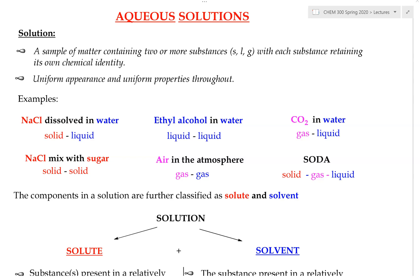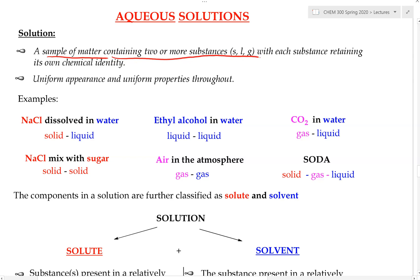First let's dissect the word aqueous. We see the word 'solution' in it. What is a solution? A solution is basically a sample of matter that has two or more substances in it, and each of the substances in a solution retain their own chemical identity. The substances can be solid, liquid, or gas. In most typical solutions, they tend to be uniform in appearance and property throughout.